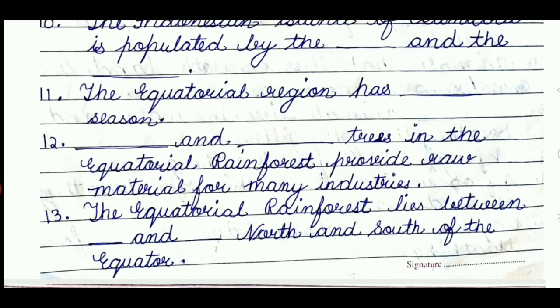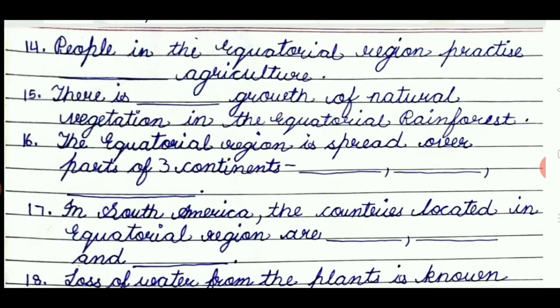Question number 13: the equatorial rainforest lies between dash and dash north and south of the equator. The answer will be 1 degree and 10 degree. Question number 14: people in the equatorial region practice dash agriculture. The answer will be shifting agriculture.